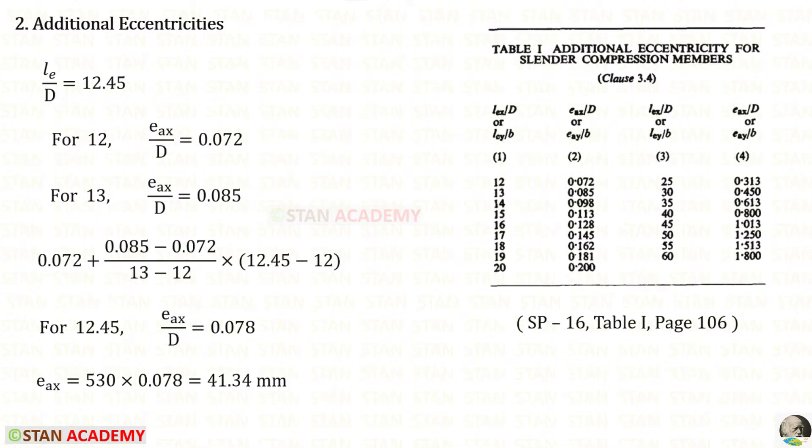Now, we need to find additional eccentricities. We need to open SP16, table number 1. It is in the page number 106. For LE upon D, we have got 12.45. 12.45 comes between 12 and 13. For 12, EAX upon D is 0.072. And for 13, it is 0.085. Now, using interpolation, for 12.45, we will get 0.078. We know the value of D, 530. So, for the eccentricity EAX, we will get 41.34 mm.